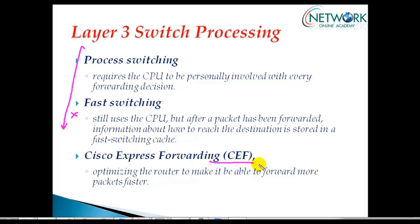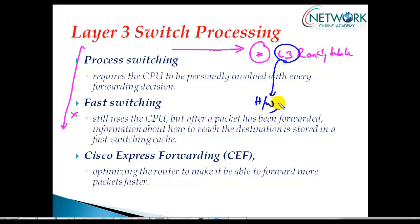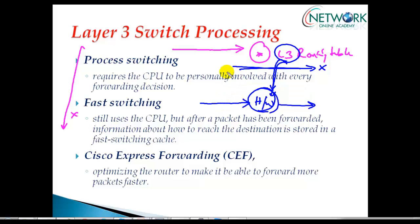These two methods are no longer commonly used. Cisco introduced a new method: Cisco Express Forwarding (CEF). In this method, before a packet even arrives, the router already maintains a Layer 3 routing table. This Layer 3 routing table is downloaded to the hardware, so processing is done at the hardware level rather than the software level. The processing does not happen in the routing table — instead it is done on the hardware.